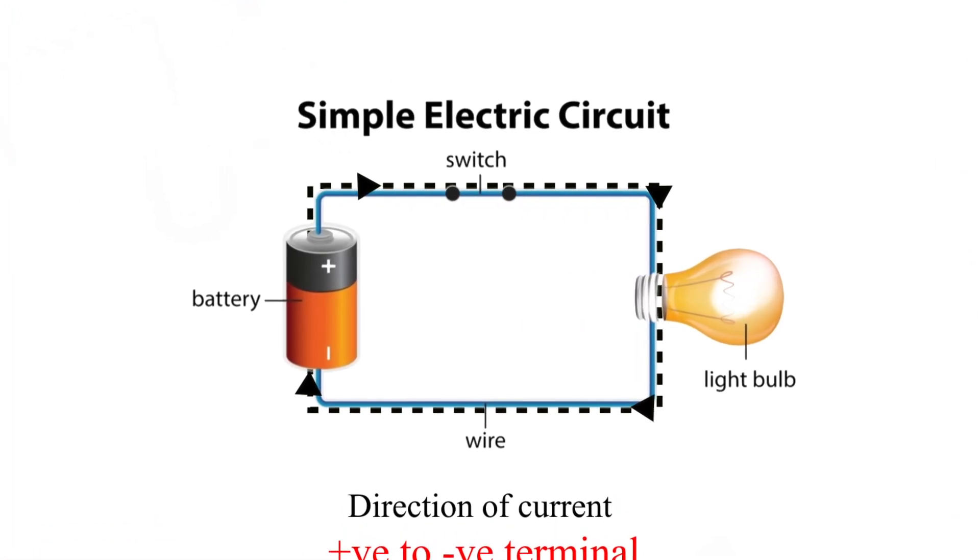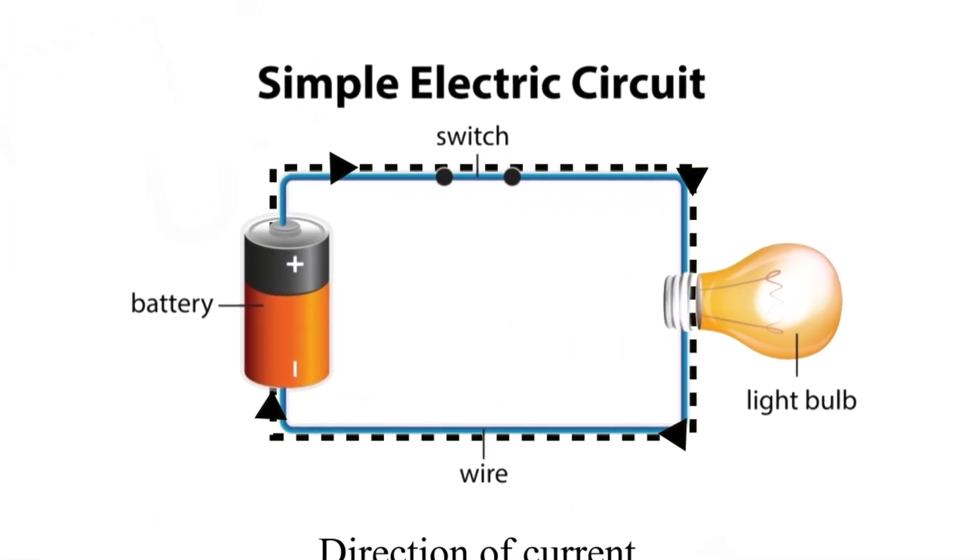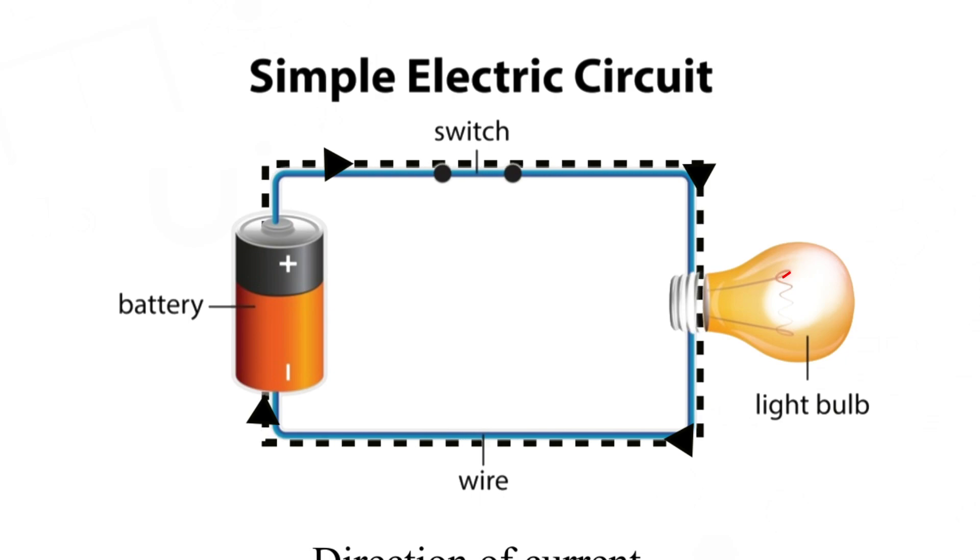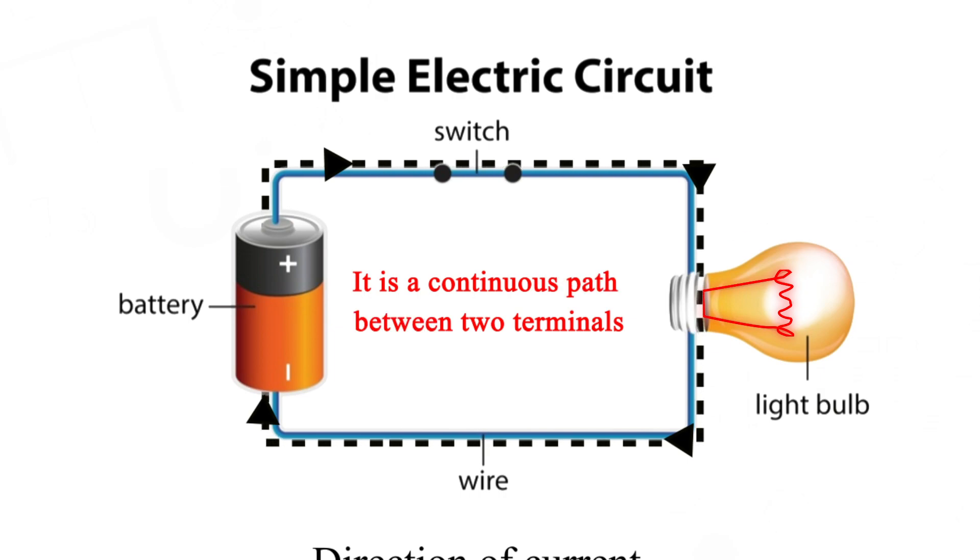When two terminals of the bulb are connected by the electric wires, the current passes through the filament and it makes the bulb glow. It is a continuous path between two terminals.